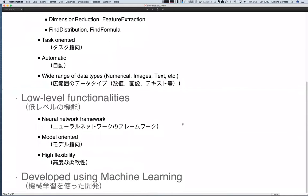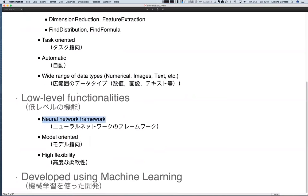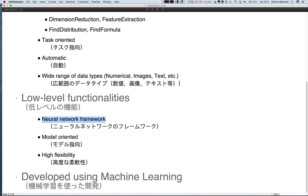The other type of functionality is quite recent: the low-level neural network framework. There, it's much more model-oriented — you define by hand the model you want to use, train it on data, and can use any loss function. It's very versatile and can work for any type of task. It's more complex to use, but much more flexible, allowing better performance.